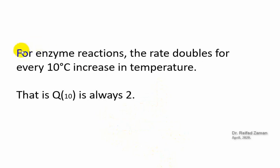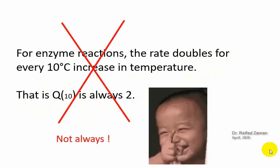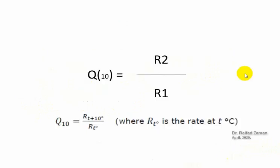You might have heard that for enzyme reactions, the rate doubles for every 10 degree increase in temperature — that is, the temperature coefficient is always 2 for enzyme reactions. But that's not always true. Temperature coefficient can vary from reaction to reaction, and can also vary depending on the temperature range.